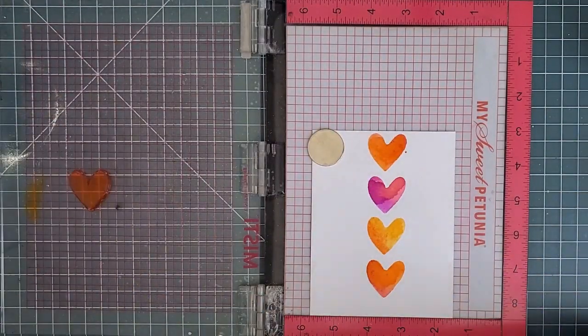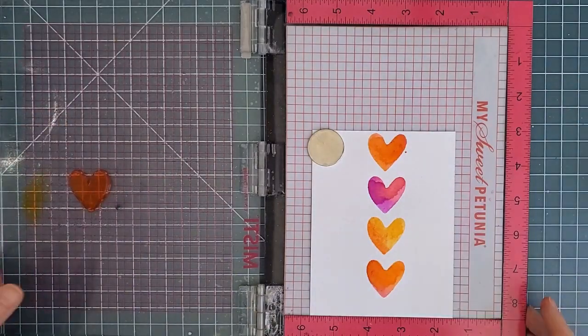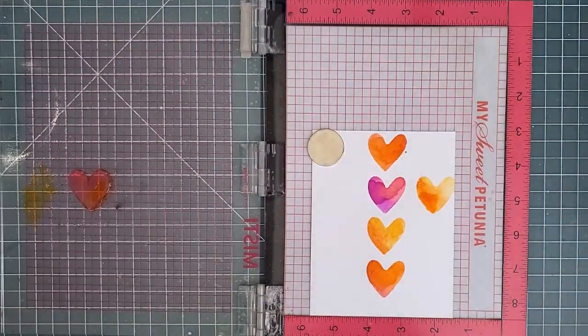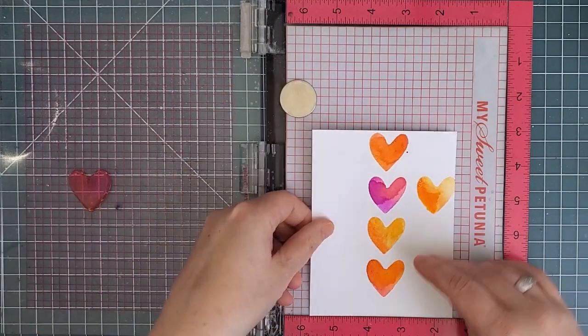I follow the same process of moving the paper up and down the MISTI to complete the column of hearts, and I switch up my colors on each one, trying to keep a good mix of the different color combinations.